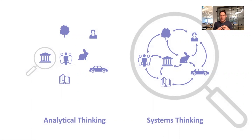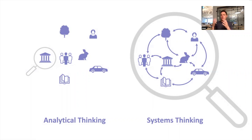Ultimately, systems thinking is looking for a balance between the two. We need both. We need to understand parts, and then we need to understand how they're interrelated into the whole. So we're saying it's a more holistic way of looking at the world — because our thinking is often characterised by a more analytical view. But ultimately, we need a balance between the two, and that's what systems thinking is really arguing for.